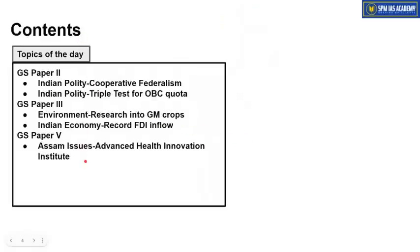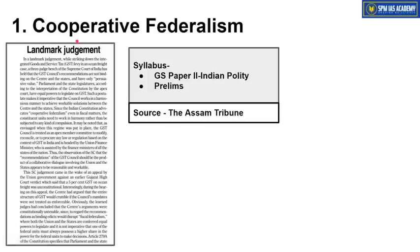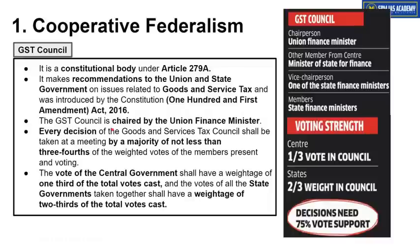This is the list of topics we will be covering from today's newspaper. The first article is about cooperative federalism, which is important from our syllabus GS Paper 2 Indian Polity point of view. To understand this article, we first need to understand the GST Council. As you all must know, it is a constitutional body mentioned under Article 279A of the Indian Constitution.